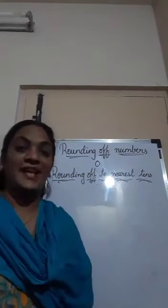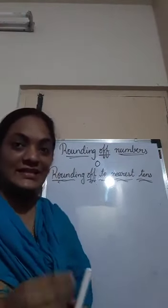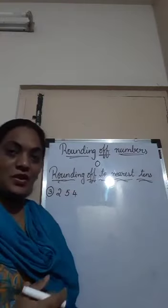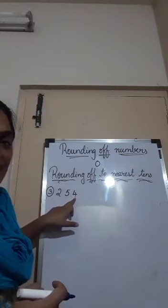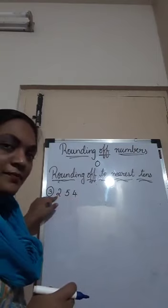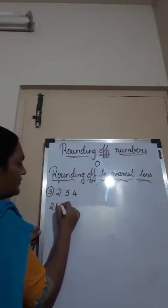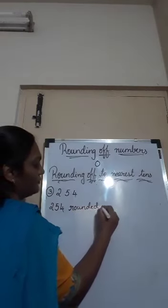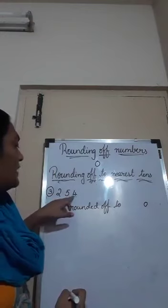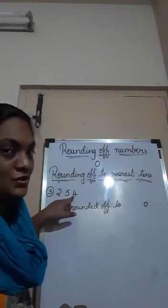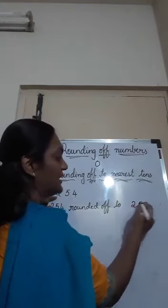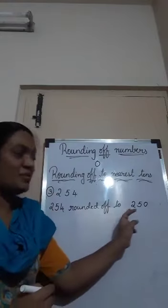Now let's see some more examples with a 3-digit number. Take 254. Here, the ones place you make as 0. The tens place depends on the ones place, and the hundreds place remains the same. We have 4 in the ones place, so the tens place remains the same — 5. Hundreds place stays as 2. So 254 rounded off to nearest 10 is 250.